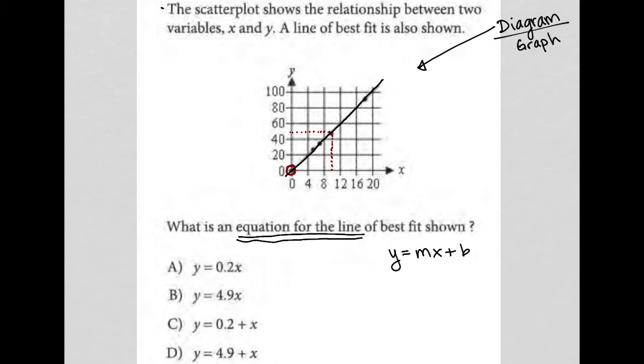So b, first of all, before I get ahead of myself, b represents your y-intercept. So, where does the graph cross the y-axis? And m is representative of your slope, which is basically, how do I get from one point to another in a rise over run fashion?